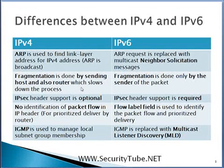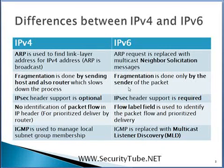In IPv4, fragmentation decisions can be taken by the sending host as well as by routers along the path — a router can fragment a packet while transferring it. In IPv6, fragmentation decisions are solely taken by the sending host. The path MTU is discovered by the sending host, and only the sending host can decide whether to fragment a packet or not.